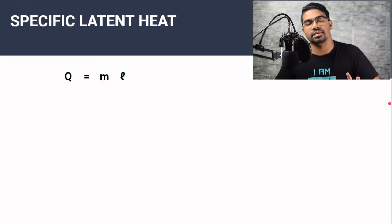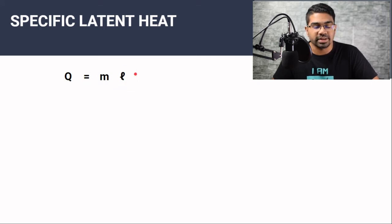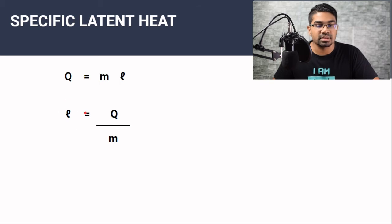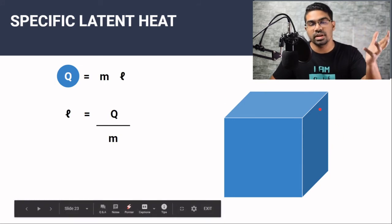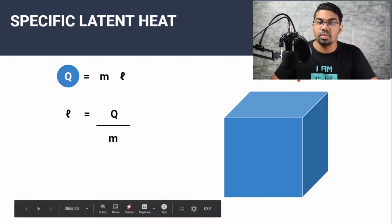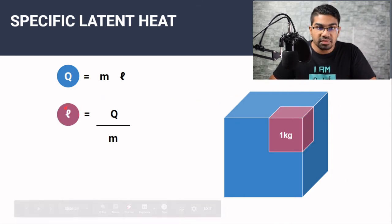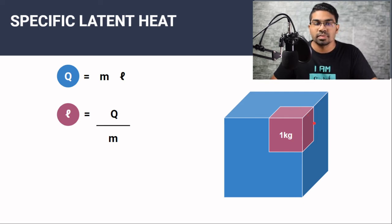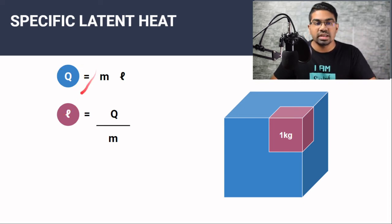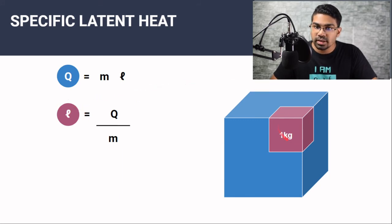The concept of specific latent heat is very similar to specific heat capacity. For latent heat, Q equals ML, where L is the specific latent heat. When we rearrange and make specific latent heat the subject, we get latent heat per unit mass. If we talk about the latent heat of an ice block, we mean the heat energy required to change the phase of the whole ice block. But specific latent heat refers to the heat energy required to change only one kilogram of the ice block. That is the key difference: latent heat refers to the whole object, while specific latent heat refers to only one kilogram of the object.